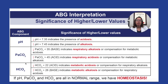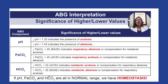Finally, when we look at bicarb, which is HCO3, it represents the metabolic system. It should be between 22 and 26. If HCO3 is under 22, that means we have metabolic acidosis, or it means the metabolic system is compensating for respiratory alkalosis. If HCO3 is over 26, this means we have metabolic alkalosis, or it could mean that the metabolic system is compensating for respiratory acidosis.